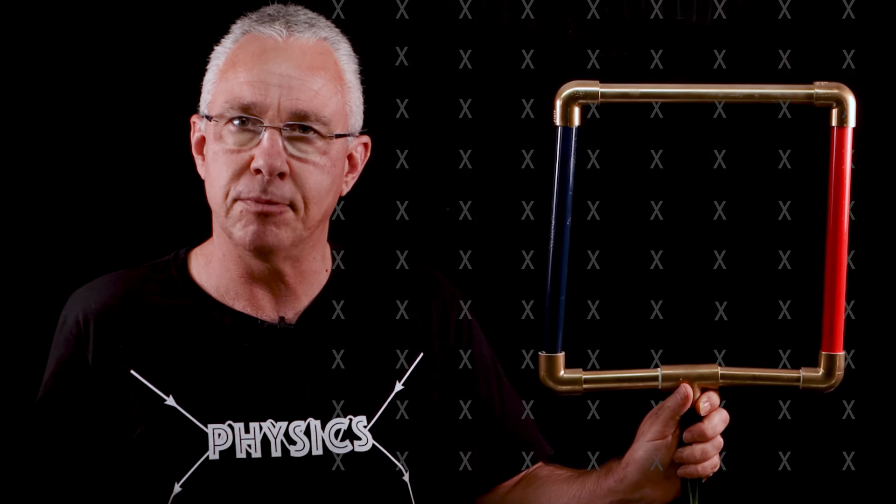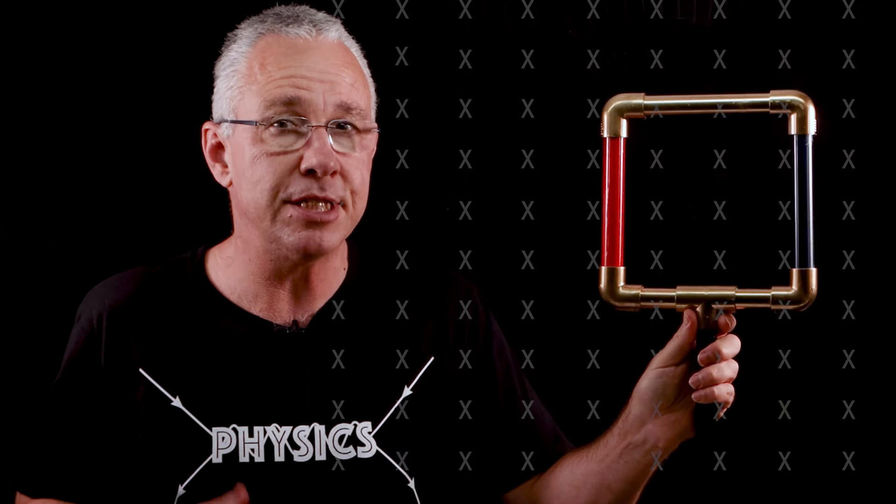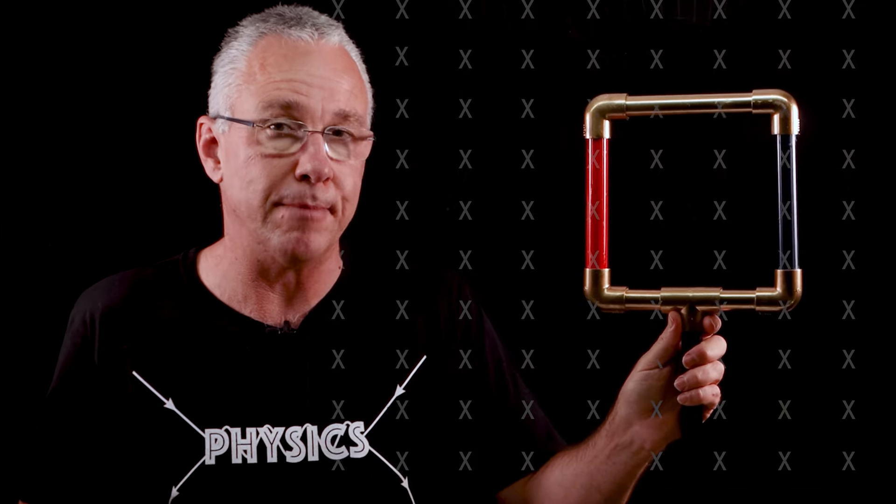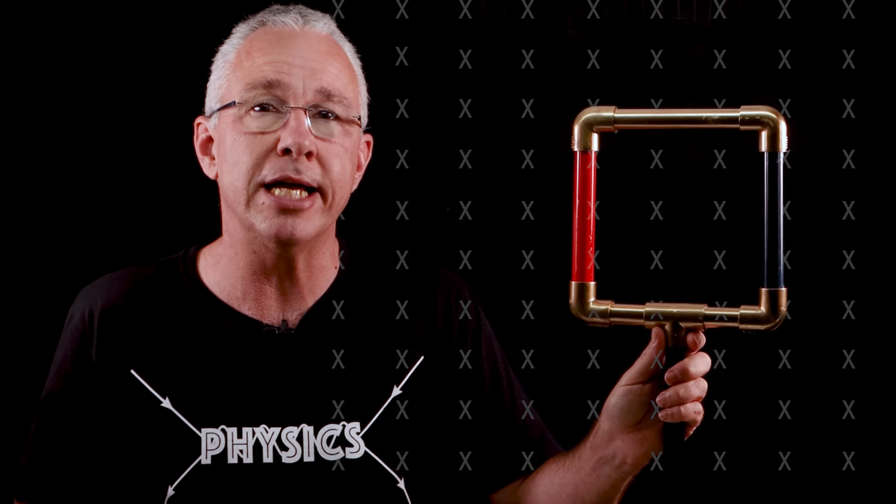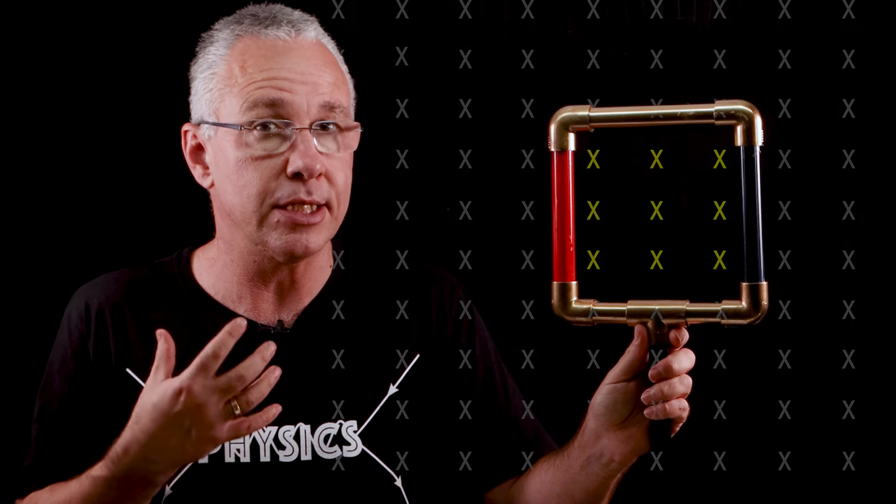How can I change the flux? Well I can change the area. So now I have significantly reduced the number of magnetic field lines. Although the magnetic field strength hasn't changed, the number of lines passing through this area now definitely is smaller.